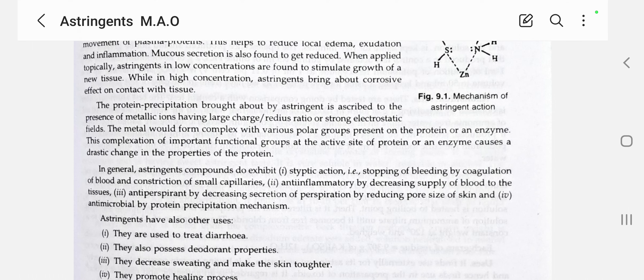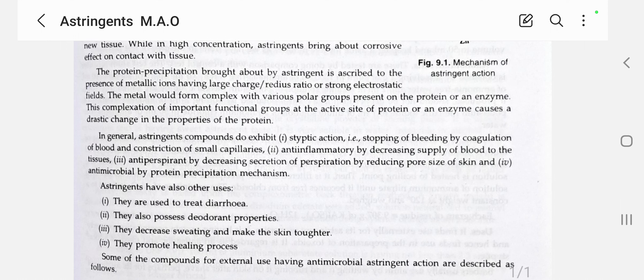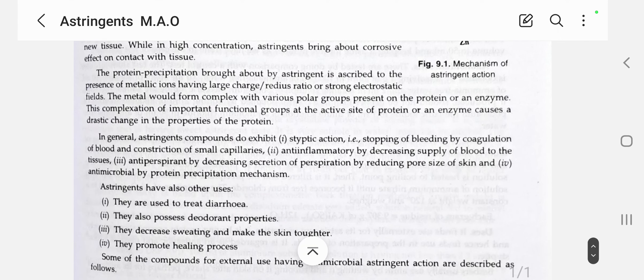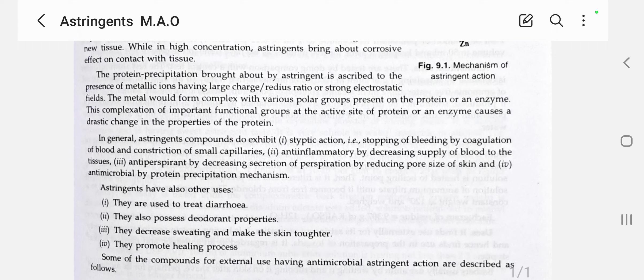Other uses include antimicrobial action by protein precipitation mechanism. Astringents are used to treat diarrhea and have deodorant properties. They decrease sweating, make the skin tougher, and promote the healing process. These are the main important astringent functions: preventing diarrhea, deodorant effect, antiperspirant, and promoting the healing process.